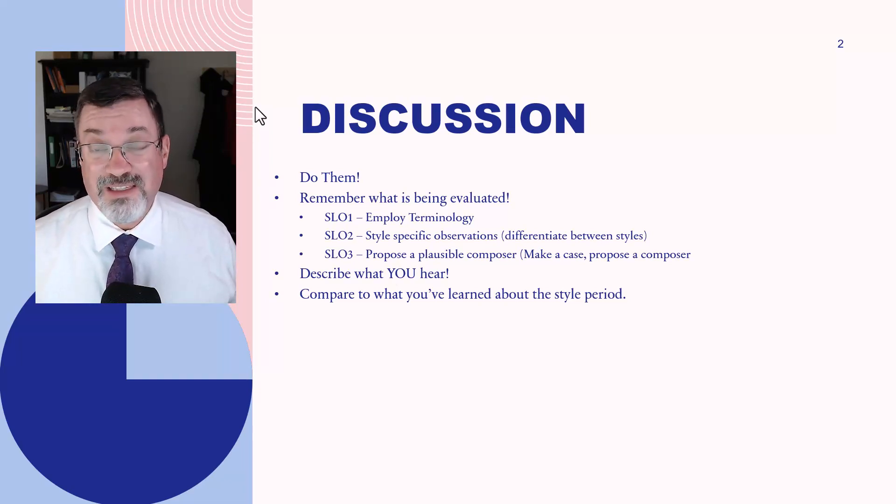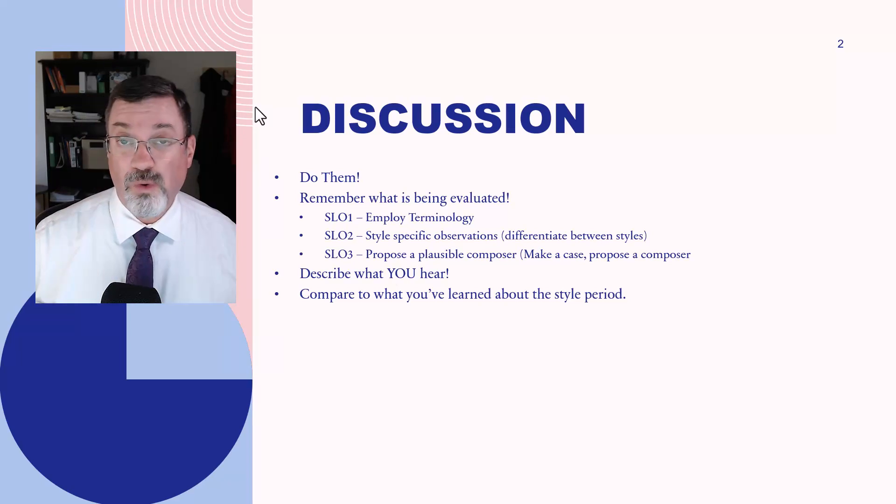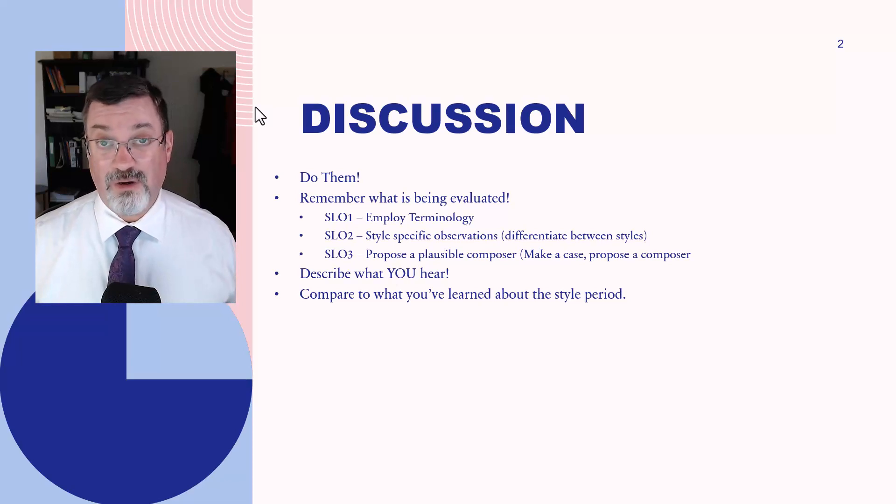Actually, no. 4, 3, 2, 1, 0 points in that order. Exceeding is 4, meeting is 3, partially meeting is 2, needs improvement is 1, failing is 0. So if you don't do a discussion post, you get a 0 for the evaluation on that SLO.